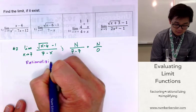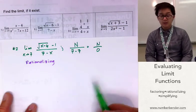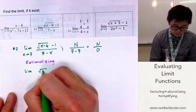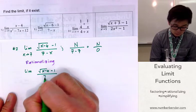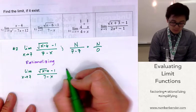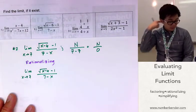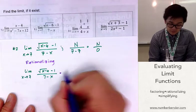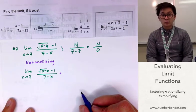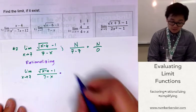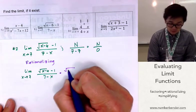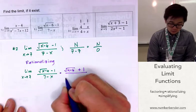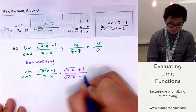Rationalizing is another technique you can use whenever you see square roots in your limit function. We have the limit of square root of x minus 6, minus 1, all over 7 minus x as x approaches 7. Rationalizing means multiplying by the conjugate of the numerator, which is square root of x minus 6 plus 1, all over square root of x minus 6 plus 1.